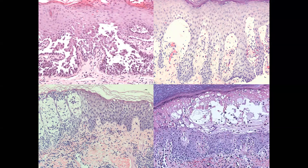Here's a summary of blister patterns: subepidermal blister with eosinophils — bullous pemphigoid; intraepidermal blister from clean acantholysis — Hailey-Hailey; intraepidermal blister from acute spongiosis — allergic contact dermatitis; ballooned degeneration with interface dermatitis — Coxsackie virus in hand, foot, and mouth; and a clean subepidermal split beneath the epidermis.